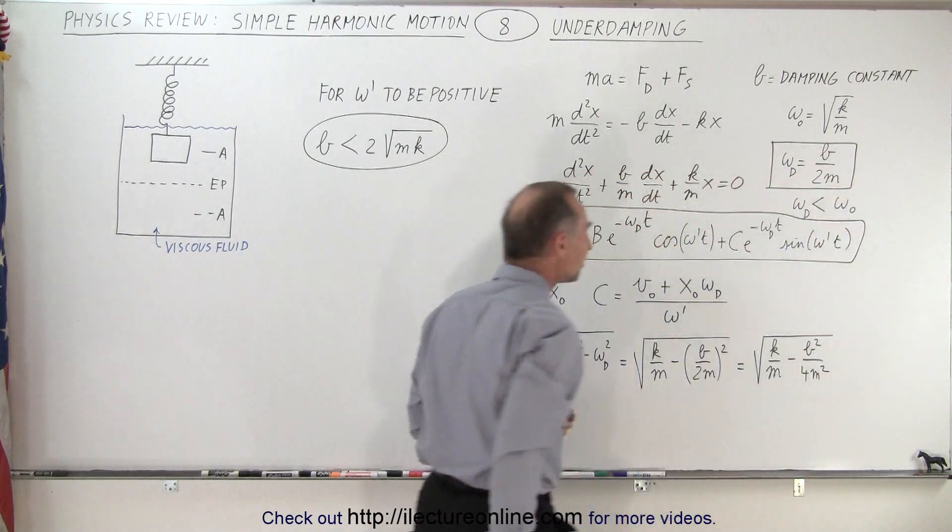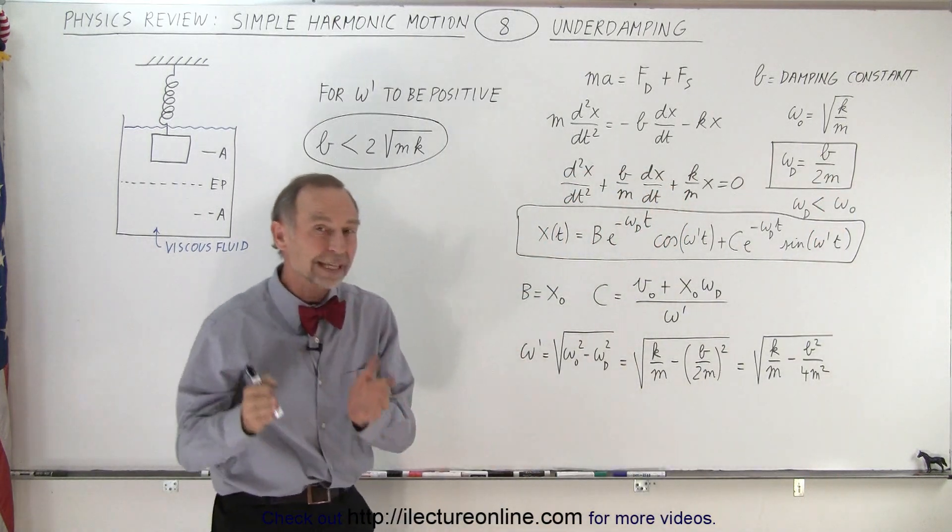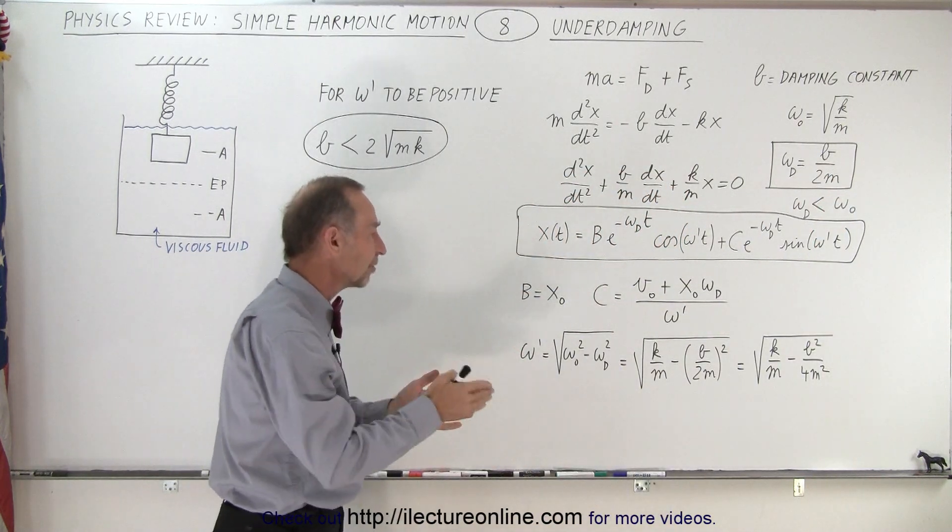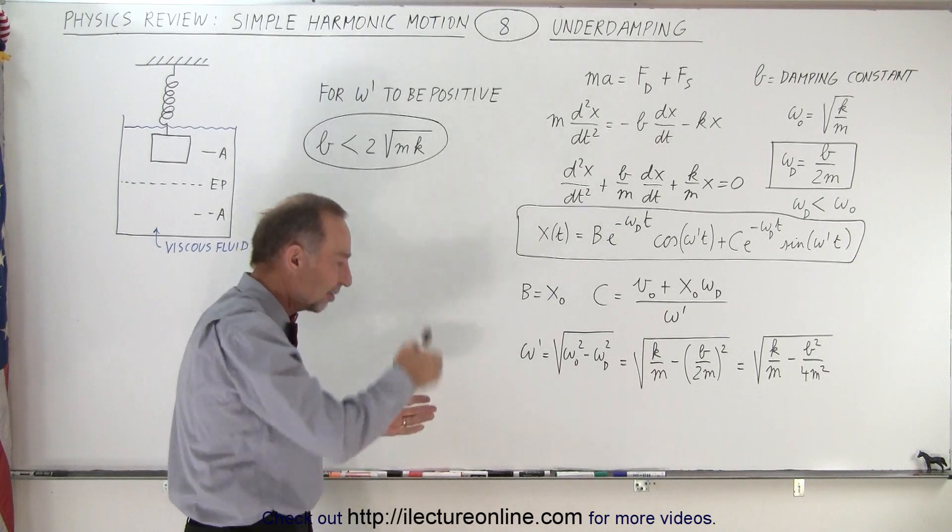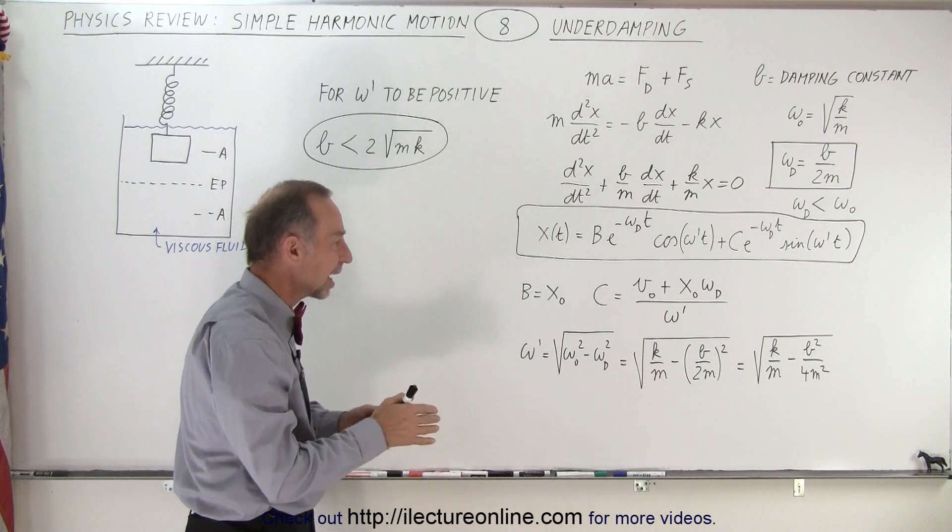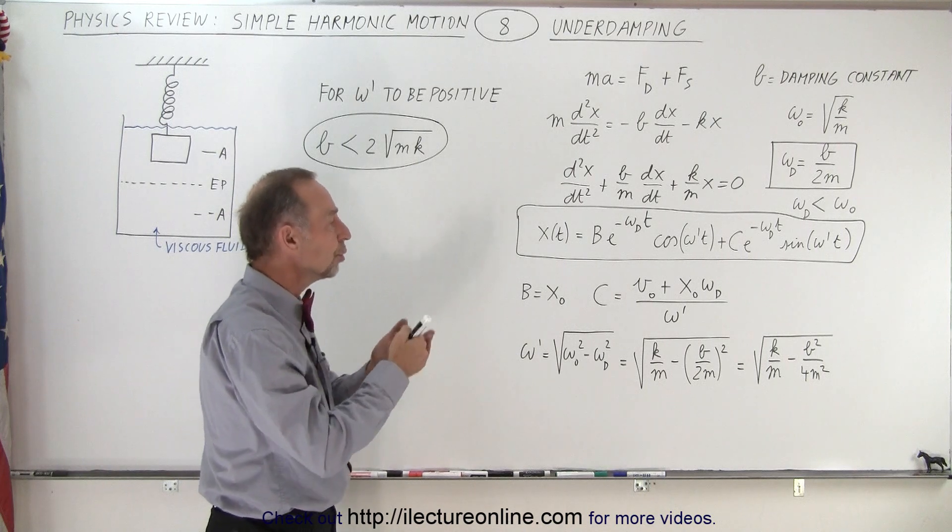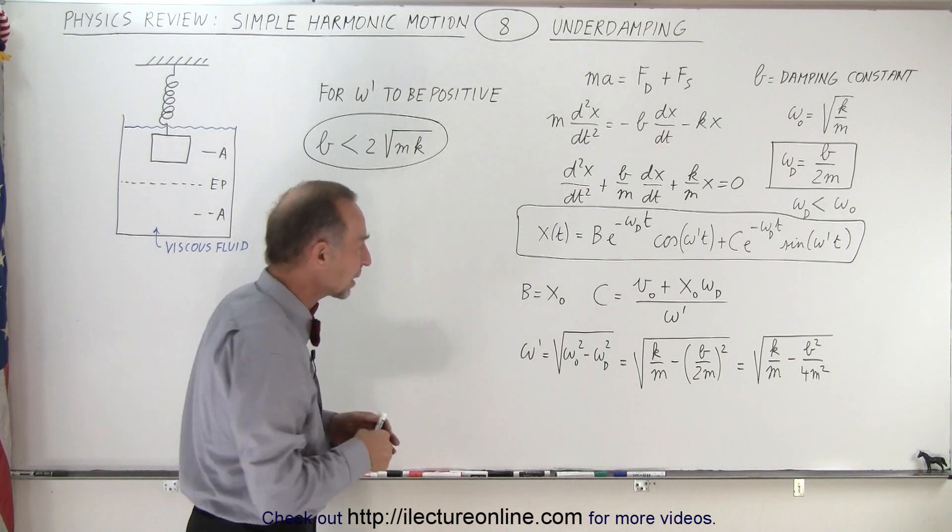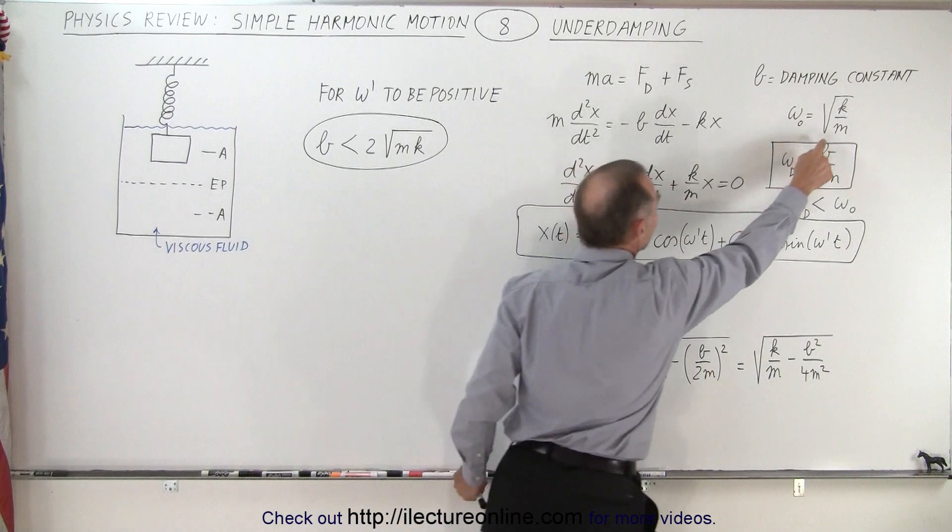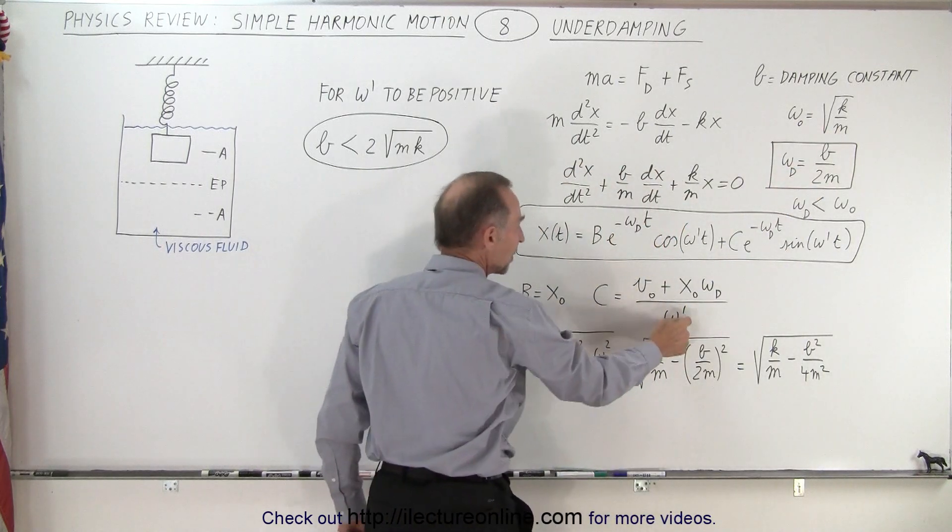Omega sub D again is equal to B over 2M. Omega prime is now the new frequency of oscillation during the damping, so as the oscillations diminish over time it is going to oscillate at a new omega, new radial frequency, no longer the square root of K over M but now it's omega prime.